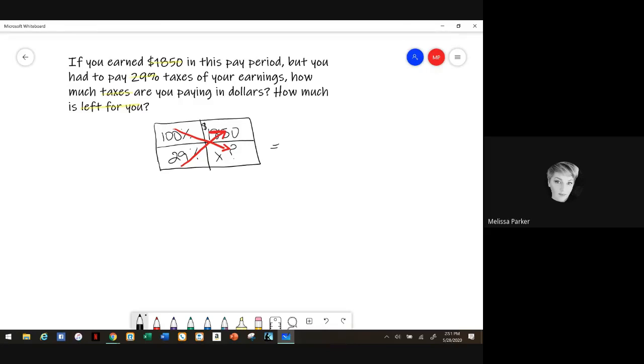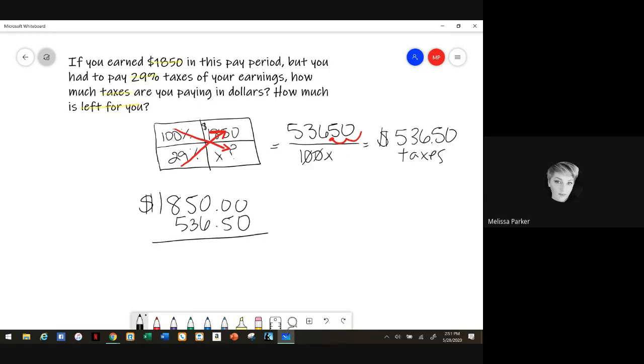So $53,650, now we're going to divide that by 100. So that means that you're going to pay $536.50 in taxes. Now to figure out how much you're going to have left, you would have to subtract that $536.50 from the $1,850.